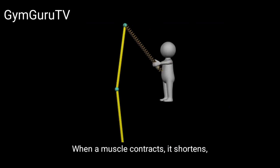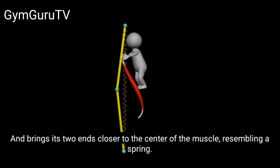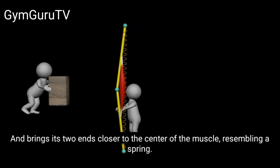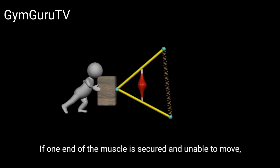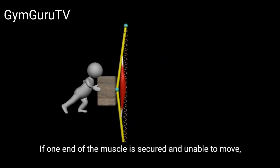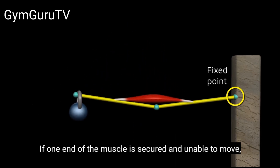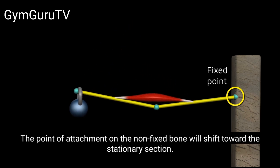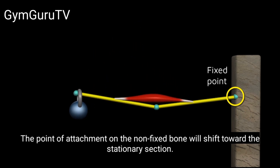When a muscle contracts, it shortens and brings its two ends closer to the center of the muscle, resembling a spring. If one end of the muscle is secured and unable to move, the point of attachment on the non-fixed bone will shift toward the stationary section.